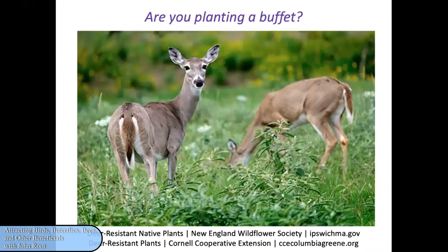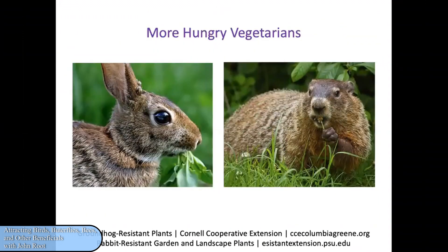When you're planning your pollinator garden for butterflies or other pollinators, think about whether vegetarians like deer might help themselves to those plants. To find out which plants are safe from deer and other critters, check out Cornell Cooperative Extension or the New England Wildflower Society. There are also more hungry vegetarians such as rabbits and woodchucks, which can also do damage to your perennial plantings. Cornell Cooperative Extension provides a list of groundhog-resistant plants.